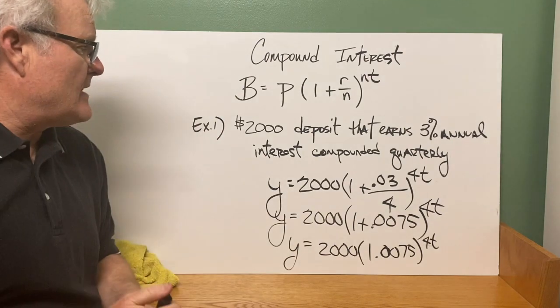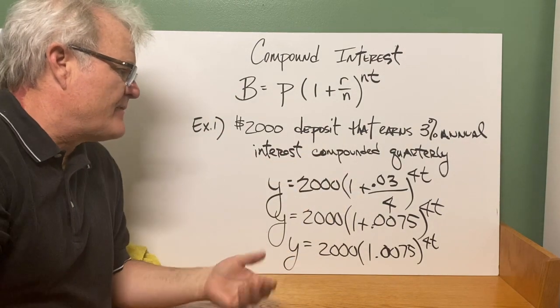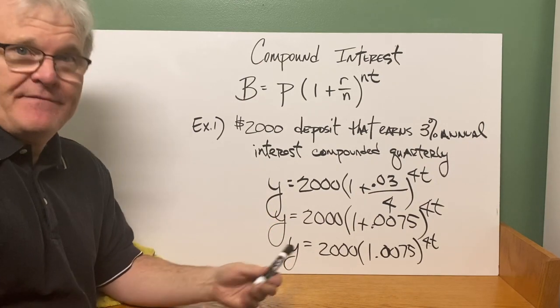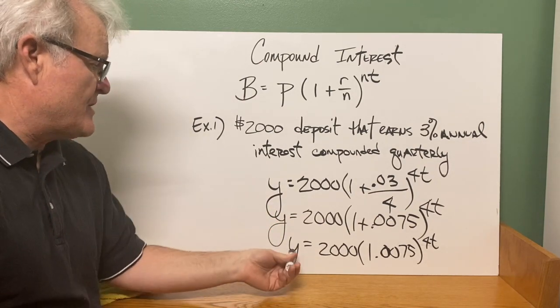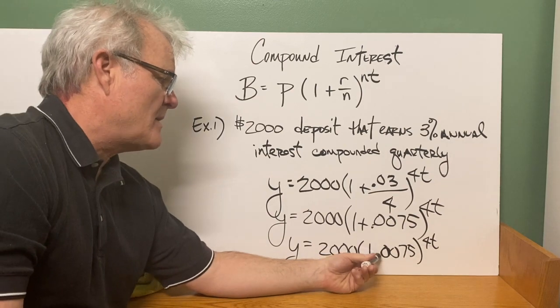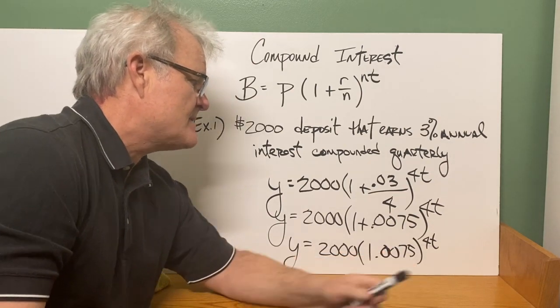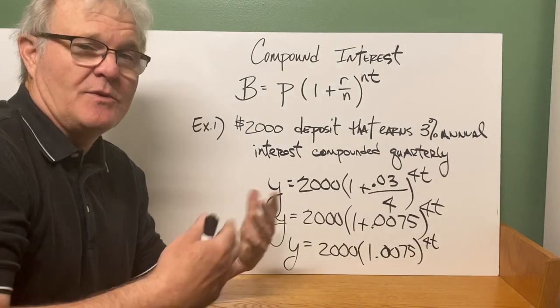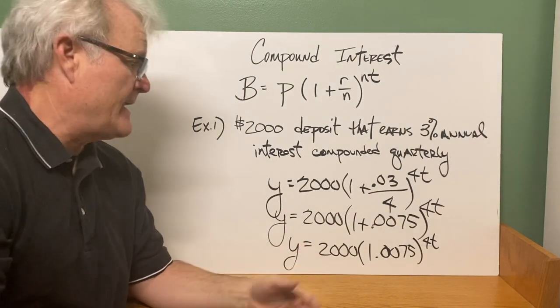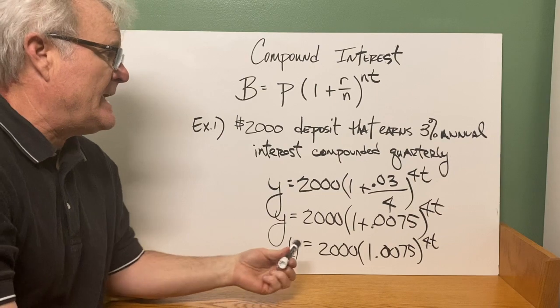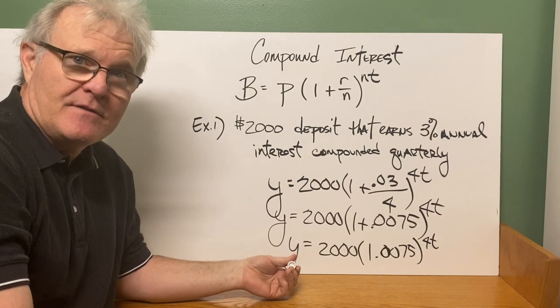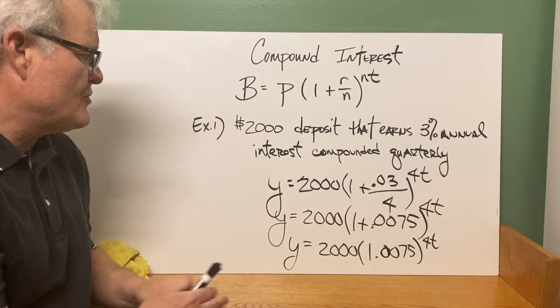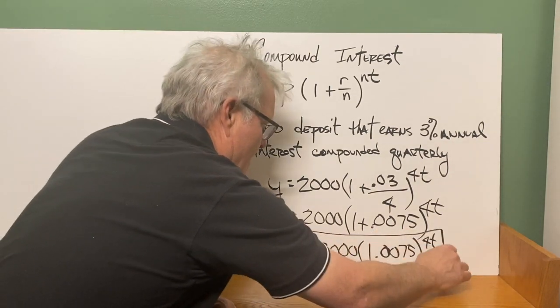Now the ones I did in class, I actually gave you a number of years. So on this one, suppose this was for five years. If this was five years, your equation would be Y equals 2,000 times 1.0075 raised to the 4 times 5 is 20th power. You would do that in your calculator, and you would get how much your balance would be in that account after the five years.